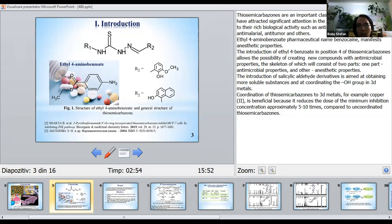Coordination of thiosemicarbazones to 3D metals, for example copper-2, is beneficial because it reduces the dose of minimum inhibition concentration approximately 5 to 10 times compared to uncoordinated thiosemicarbazones.